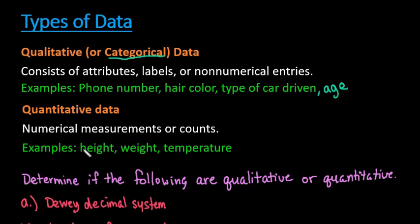With quantitative data, examples are height, weight, temperature. Again, age could fall underneath this one because of the fact that age could be a measurement. You could find the average age of students. So it is one that you have to look at the context of for sure.